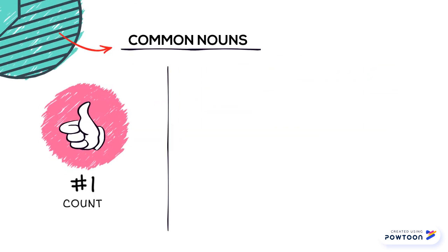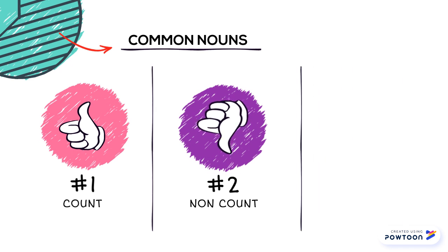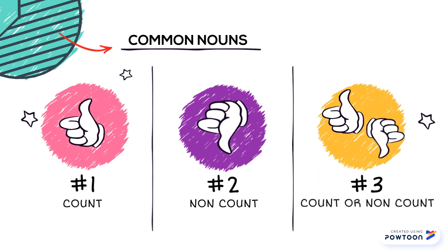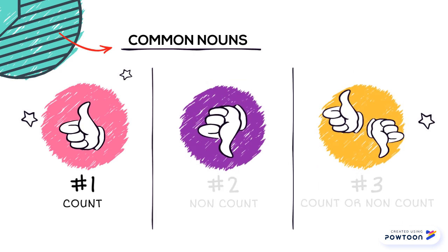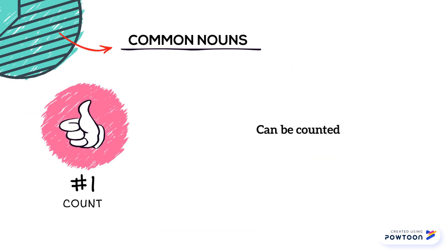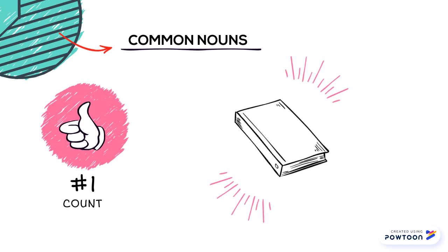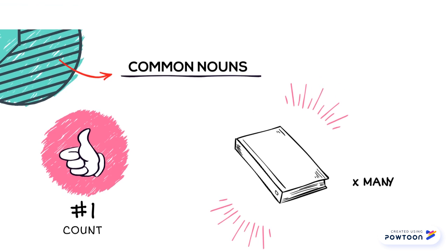Common nouns are also divided into three types. Count, which can be counted. For example: I have a book. I have a hundred books. I have many books.